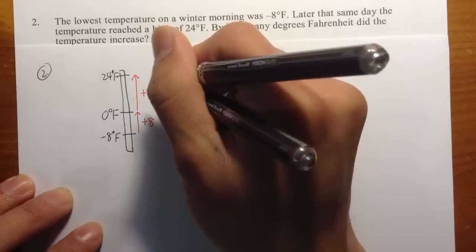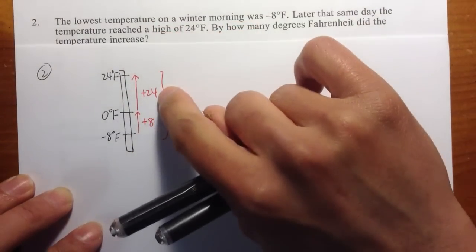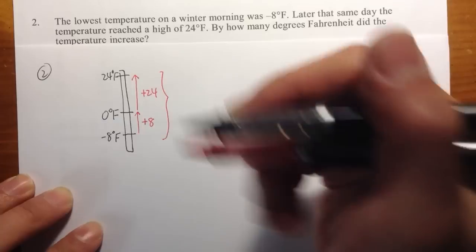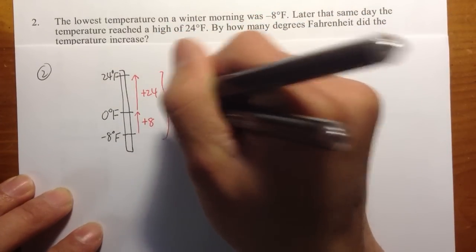So altogether, I need to go up 8, and then I need to go up 24 more. So altogether, I need to have 8 plus 24, which is 32 degree increase.